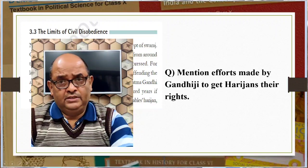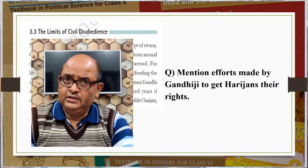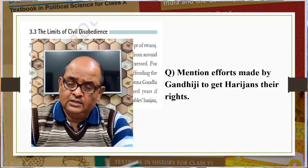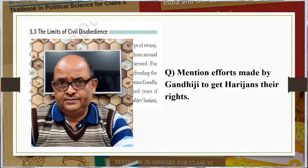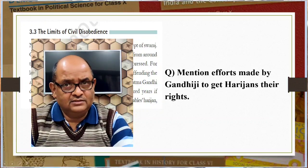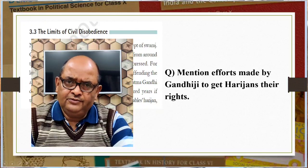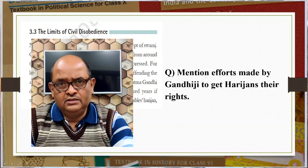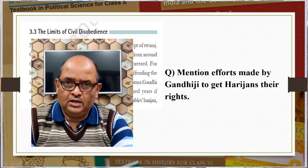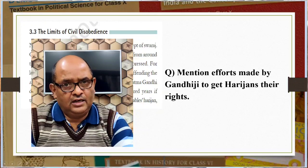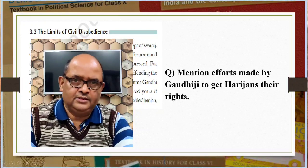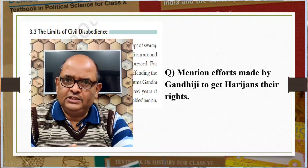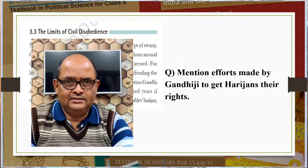Mention the efforts made by Gandhiji to get Harijans their rights. Gandhiji was of the opinion that Swaraj would not come for a hundred years if untouchability was not eliminated. He organized Satyagrahas to secure their entry into temples and access to public wells, tanks, roads and schools. He himself toured their colonies and even lived there. He cleaned toilets to dignify the work of the bhangi and persuaded upper castes to change their heart and give up the sin of untouchability. He signed the Poona Pact with Dr. Ambedkar, through which some seats were reserved for them in provincial and central legislative councils.